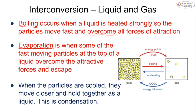Evaporation happens when some of the fast-moving particles at the top of a liquid overcome the attractive forces and escape. Whilst there is still some heating going on, boiling involves heating all of the particles, whereas evaporation only happens at the surface of a liquid, so it takes much longer. When particles are cooled from a gas into a liquid, they move closer together and start touching, sliding past each other with less random movement — we call this condensation.